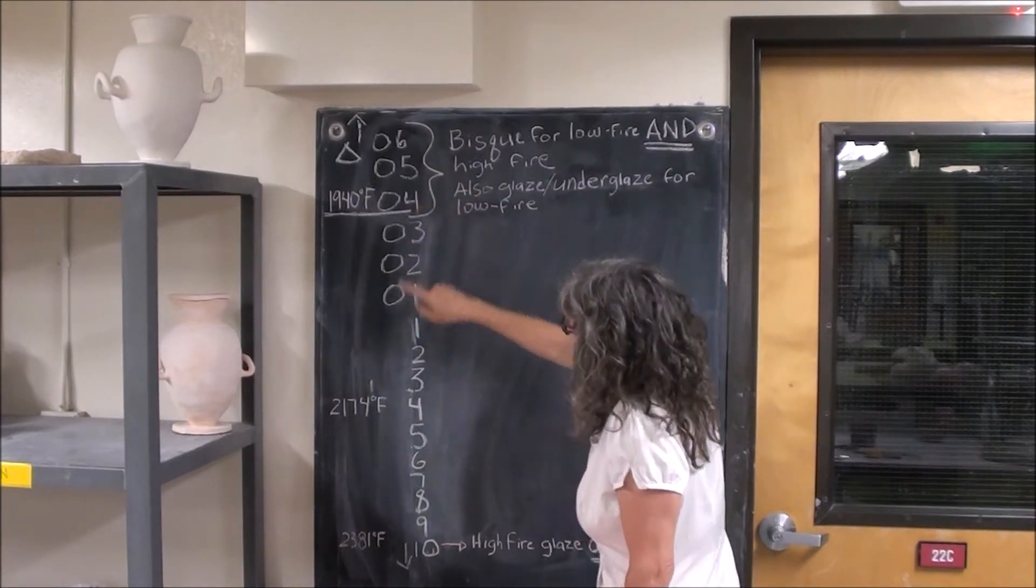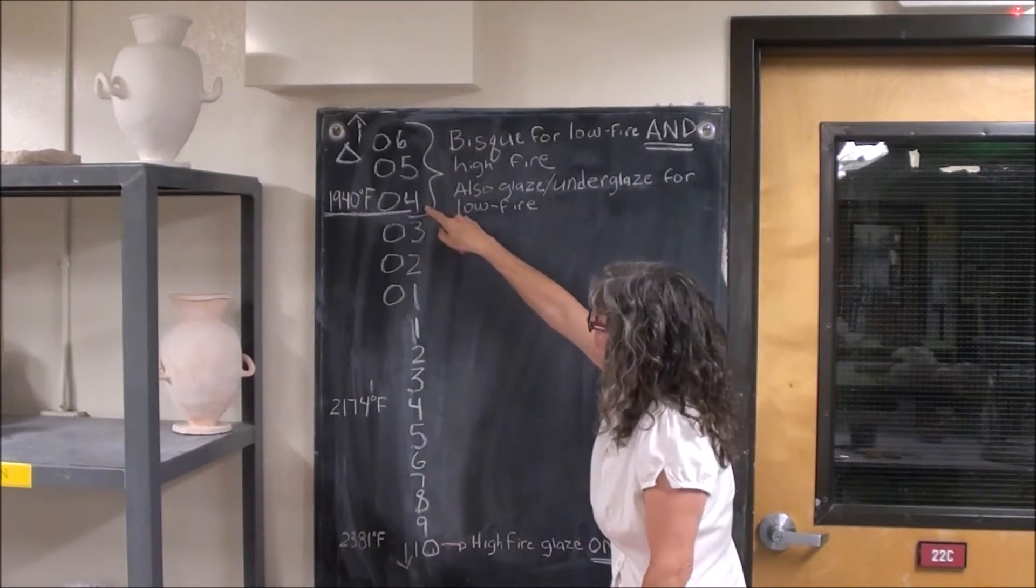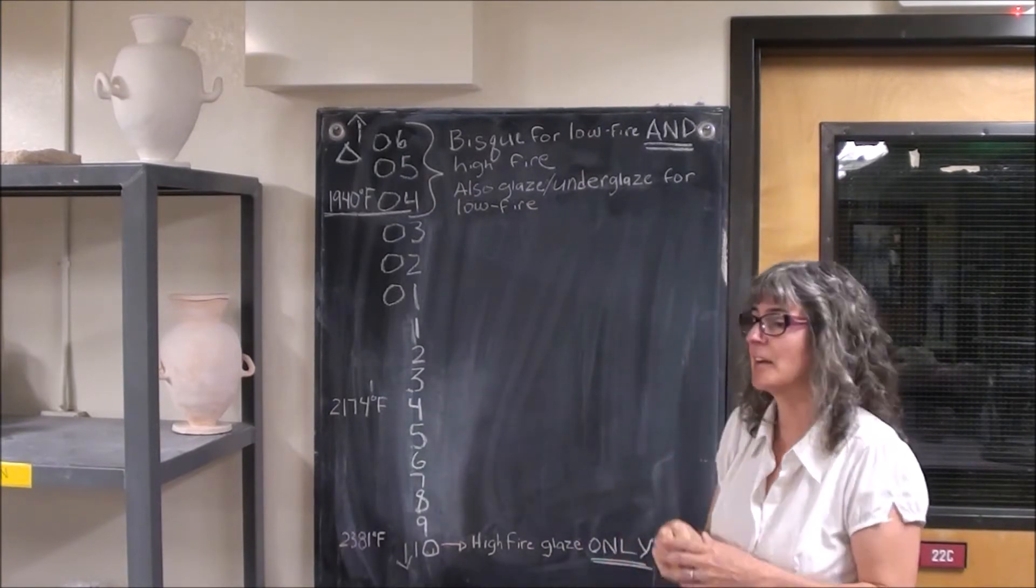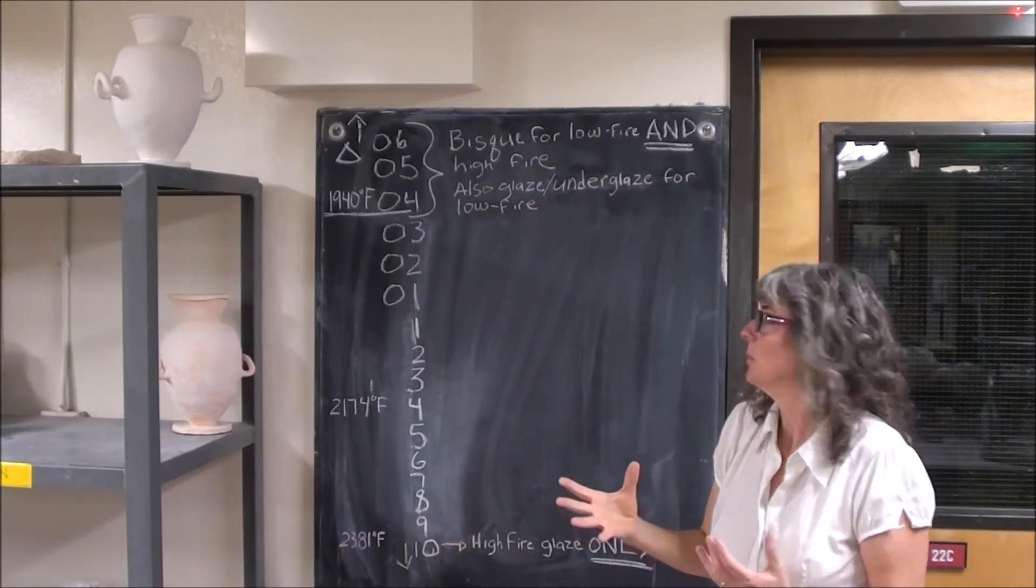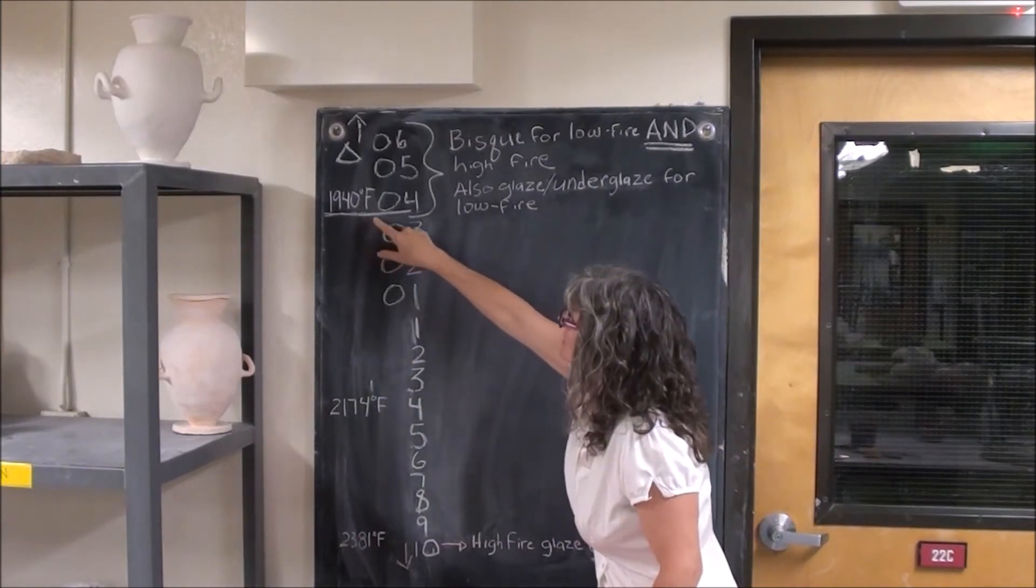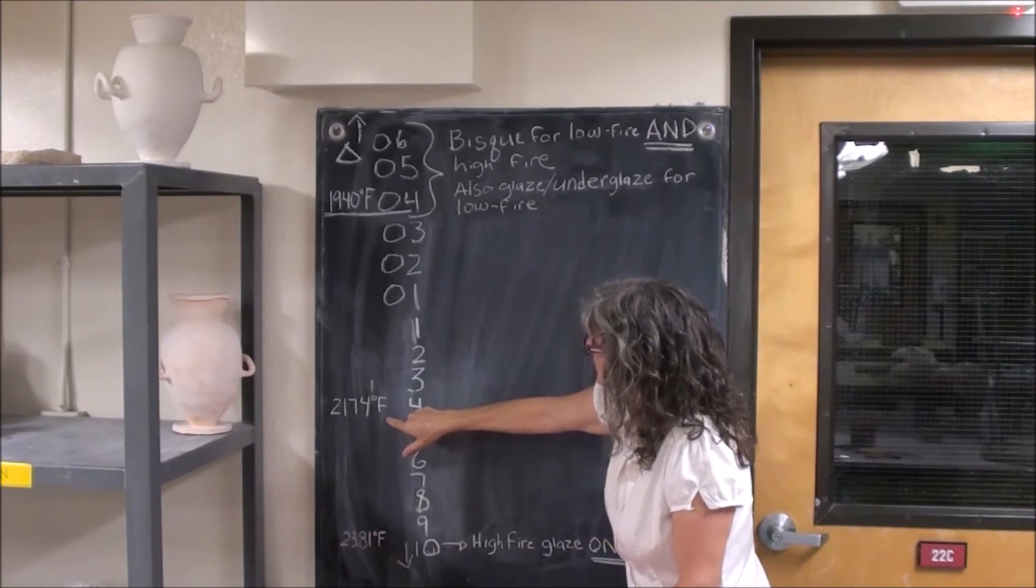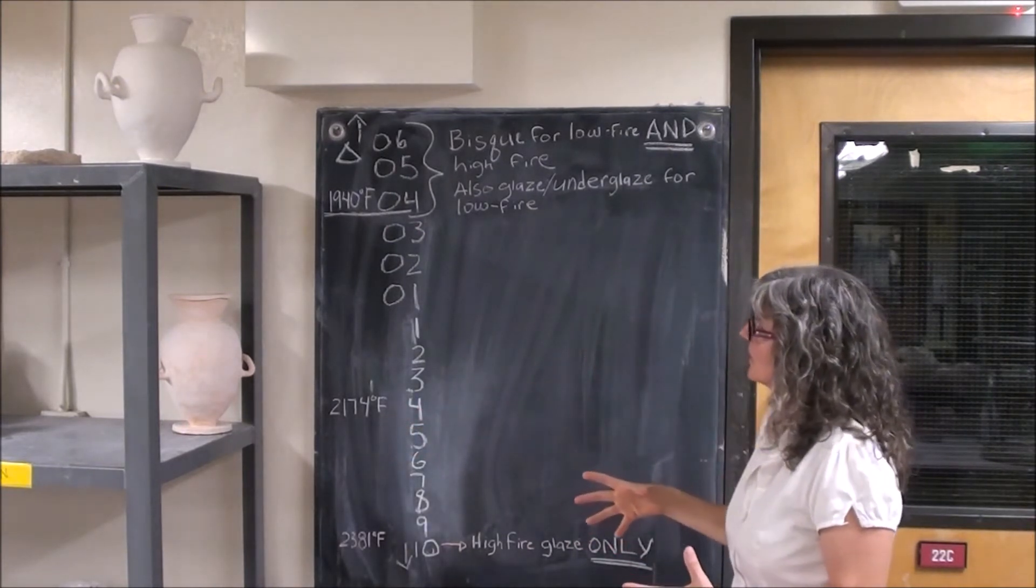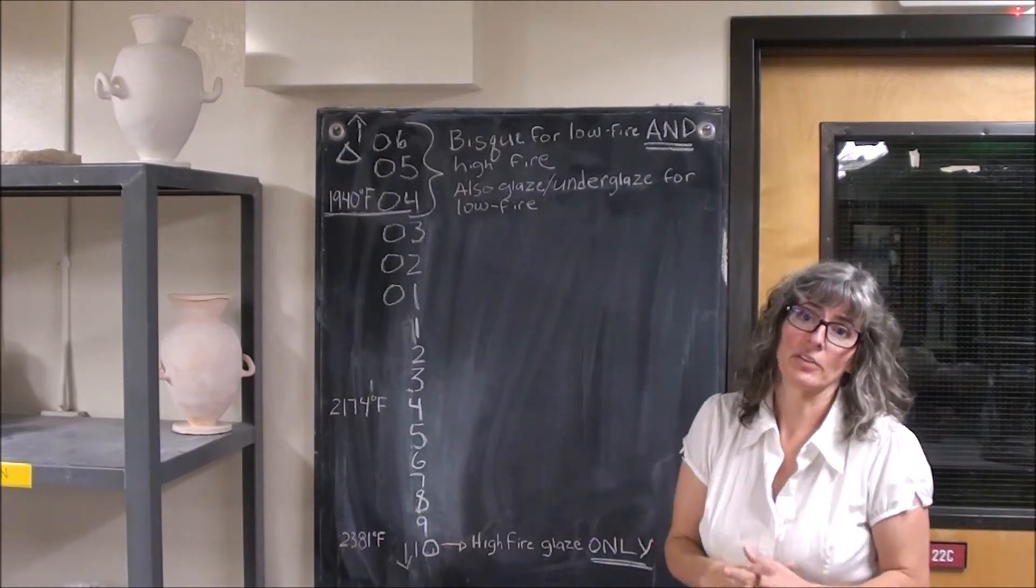Cone o4 is a much lower temperature than cone 4. Never get lazy and say you want to fire to cone 4 when you really mean cone o4. This is 1940 degrees Fahrenheit. This is 2174 degrees Fahrenheit. That's not a huge temperature variation, but in the kiln it's miles apart.